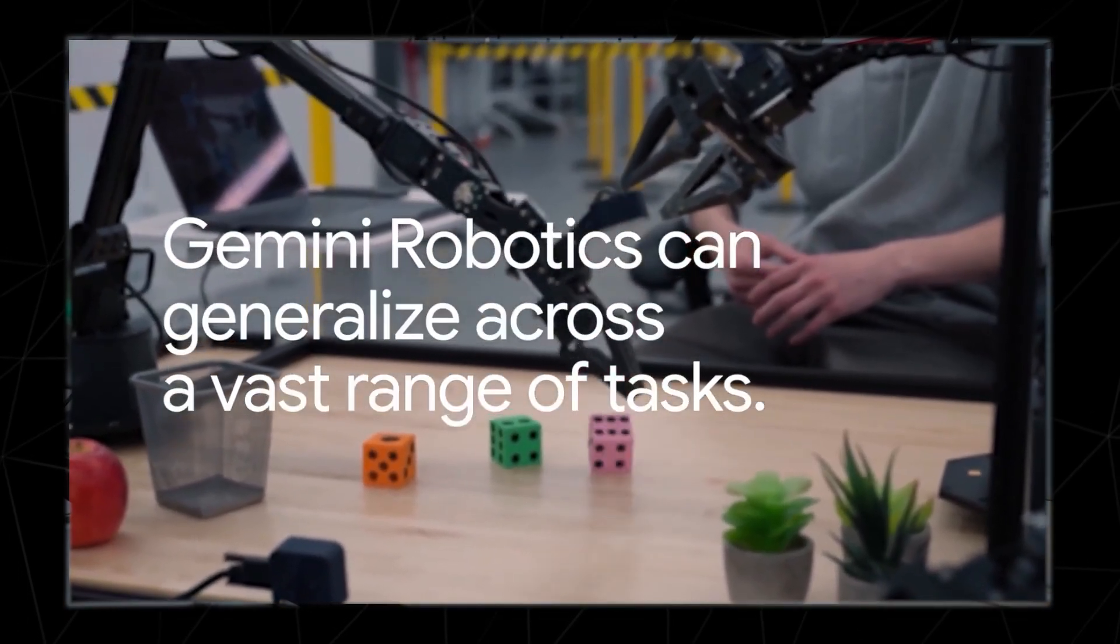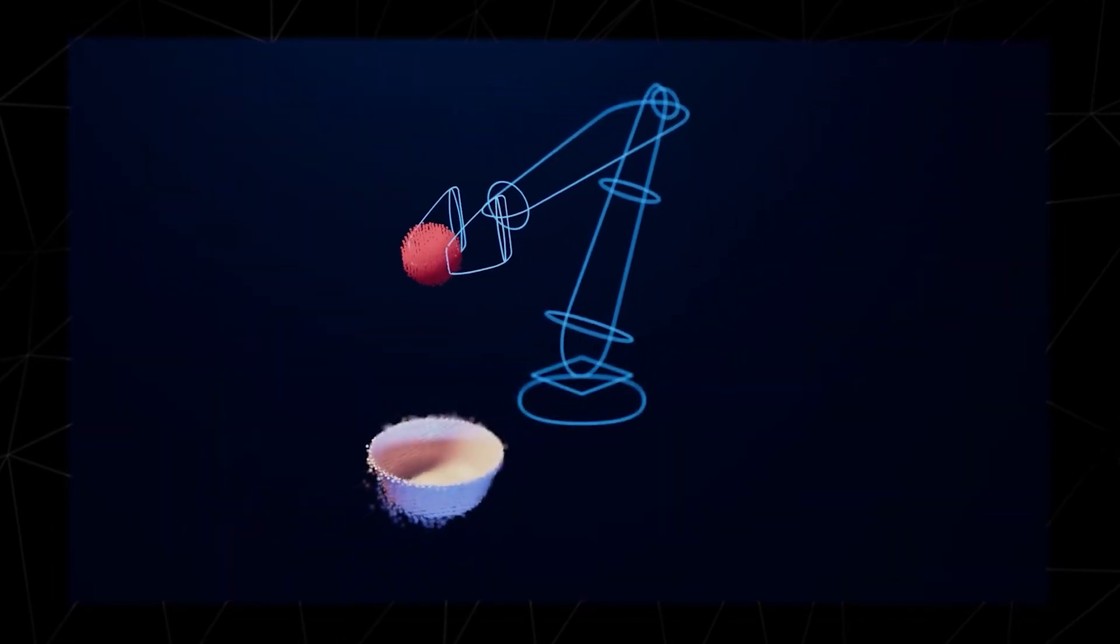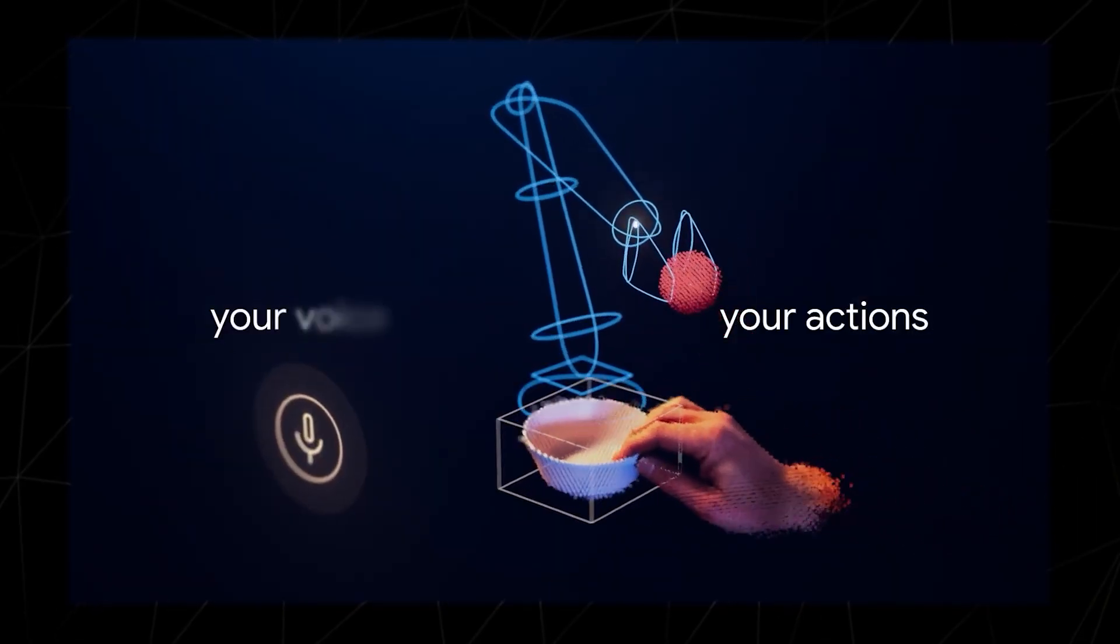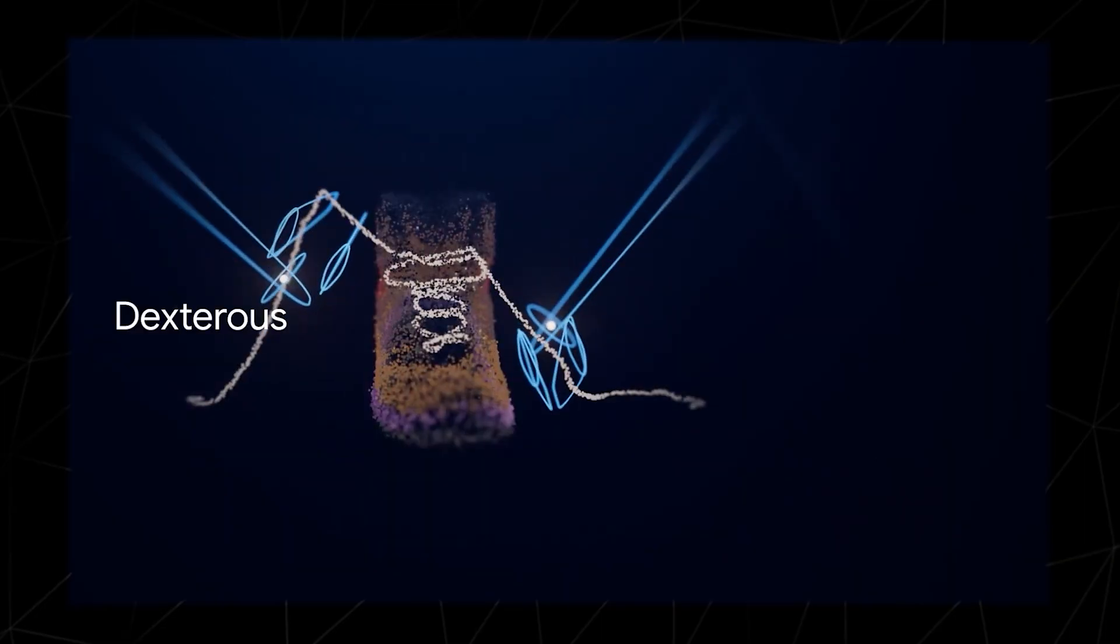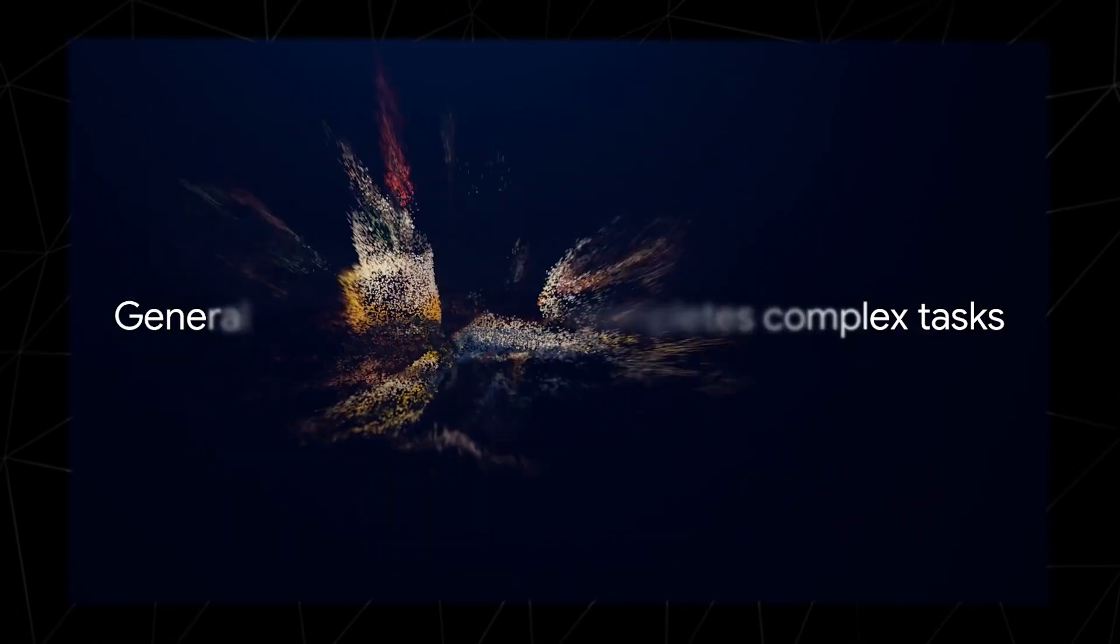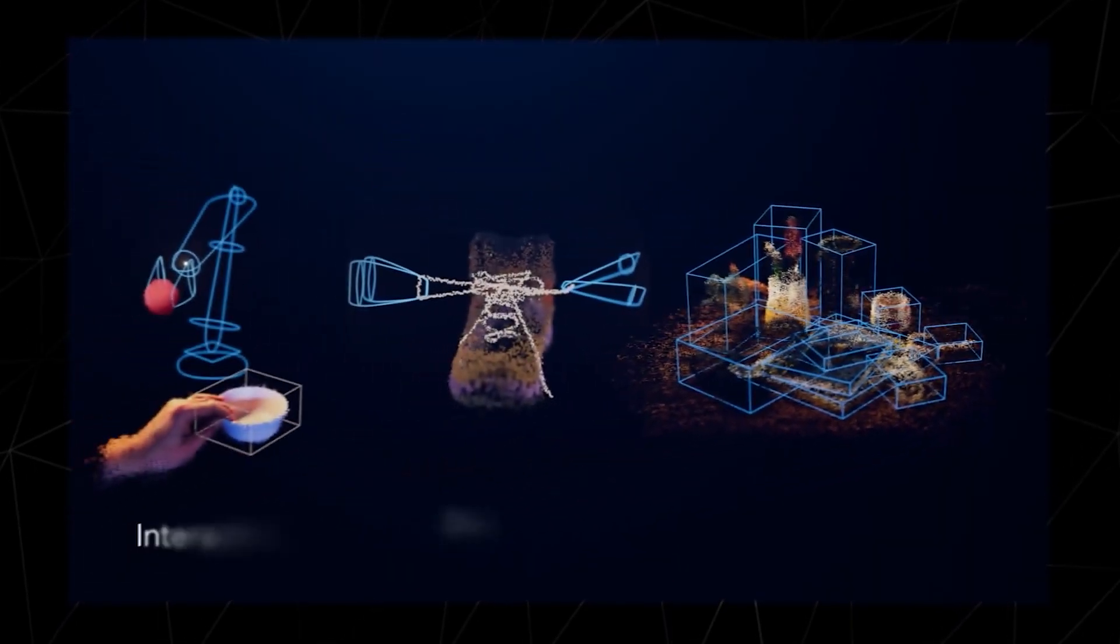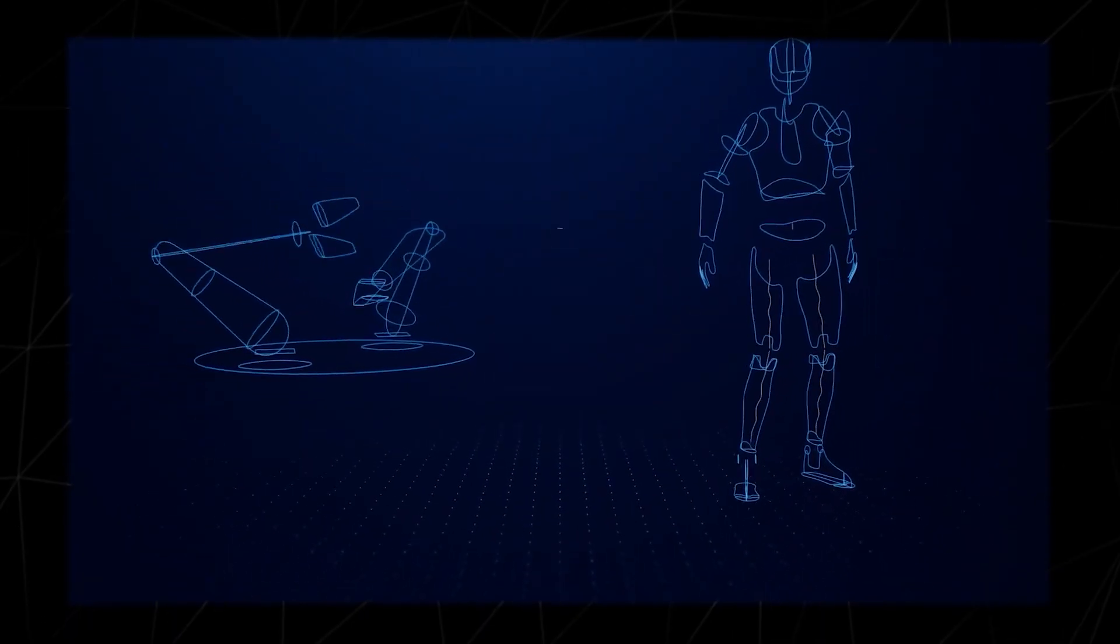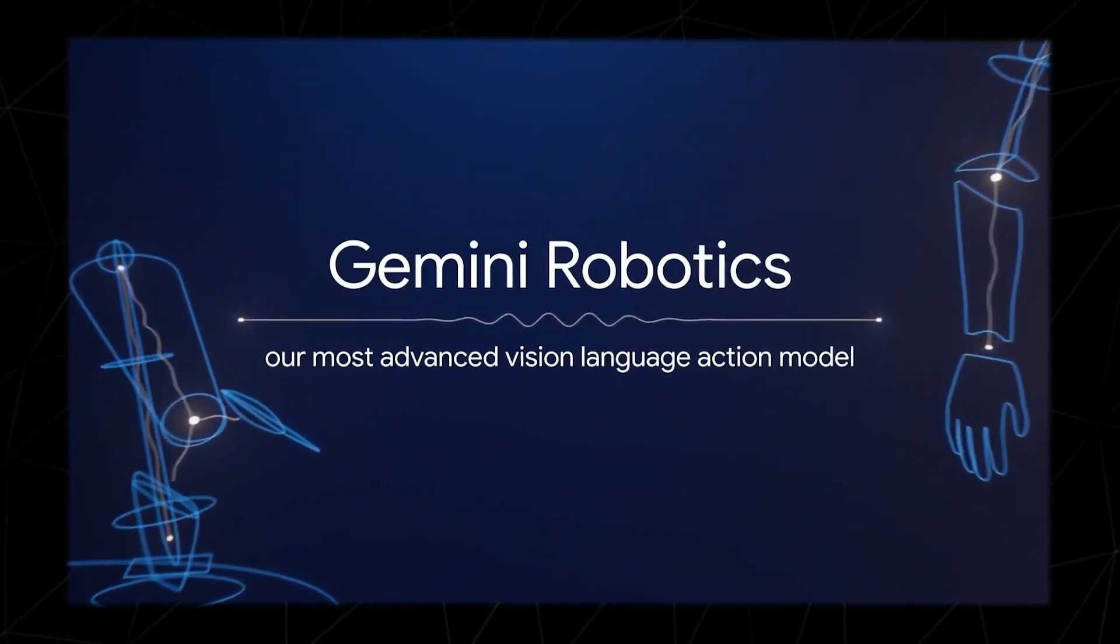Gemini 2.0's intelligence to general-purpose robotic agents in the physical world. To be helpful, robots need to be interactive, responding live to your actions and your voice. They need to be dexterous to complete your most complex tasks, and they need to be general to understand things in your 3D world. All of these capabilities need to work across different physical forms. We're bringing this together in Gemini Robotics, our most advanced vision-language action model.